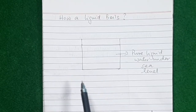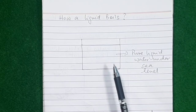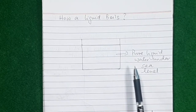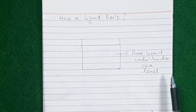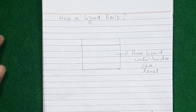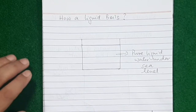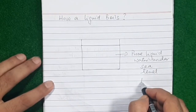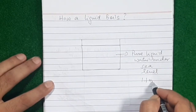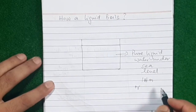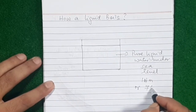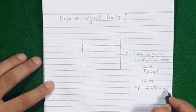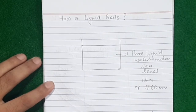Now we'll try to understand how a liquid boils. I've taken pure water at sea level where the atmospheric pressure is highest. The atmospheric pressure at sea level is measured as one atmosphere, or 760 mm of mercury.